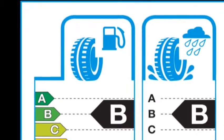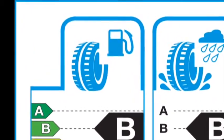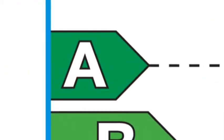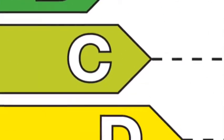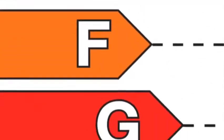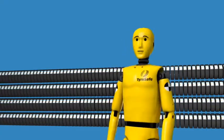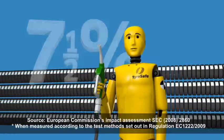There are seven different classes, from category A, which is the most efficient—A means you'll use the least amount of fuel for your journey—through to category G, which is the least fuel efficient. Driving on A-rated tires could reduce your fuel consumption by 7.5% compared with G-grade tires.